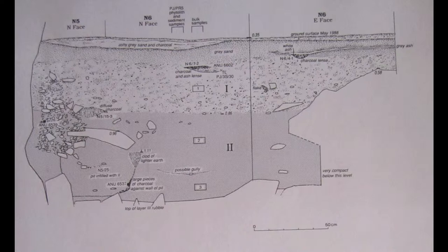Don't draw a line around mottled areas as if it was a bounded layer. If you're outlining organic concentrations or charcoal smudges, you have to try and work out what you're looking at and annotate your drawing. Are you looking at a hearth, a diffuse hearth, or just an area of charcoal enrichment, or maybe tree roots?